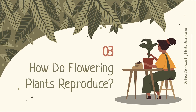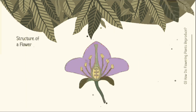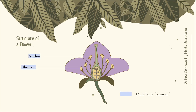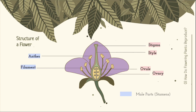How do flowering plants reproduce? Before we answer this question, let's find out how exactly the flower looks for it to be able to go through processes like pollination. The flower has eight main parts. The anther and filament belong to the male parts, called the stamens. The stigma, style, ovary, and ovule belong to the female parts, called the carpel.